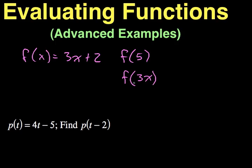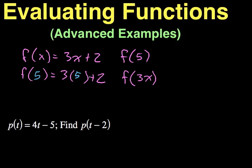Just to remind you of the technique we've been using, let's say we were doing f of 5. We're going to rewrite the original function — this is a very important technique. I'm rewriting 3x plus 2, but instead of writing x, I used an open parentheses everywhere I saw the variable. To evaluate at f of 5, I simply insert 5: 3 times 5 is 15, plus 2 is 17. So f of 5 is 17.